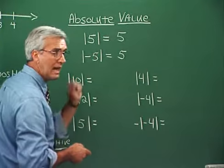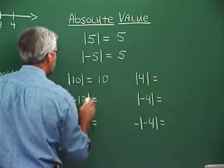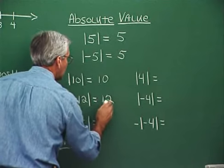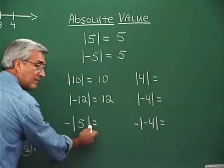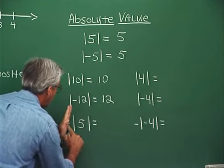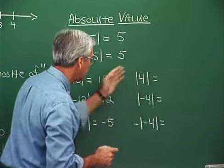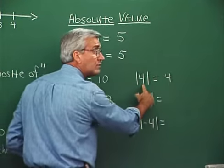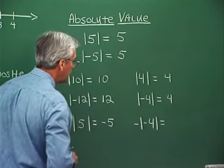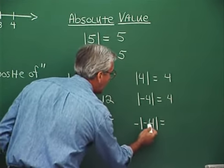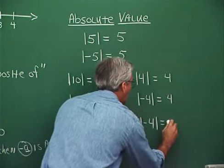Absolute values of numbers are always positive. The absolute value of ten — ten is ten units from zero, so this is ten. The absolute value of negative twelve — twelve units from zero — so that's twelve. What about the opposite of the absolute value of five? This part of the problem is five, but this is the opposite of five, which would be negative five. The absolute value of four is four; the absolute value of negative four is also four. And the opposite of the absolute value of negative four: the absolute value of negative four is four, so this is the opposite of four, or negative four.